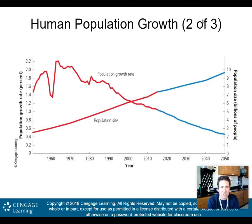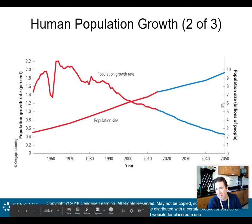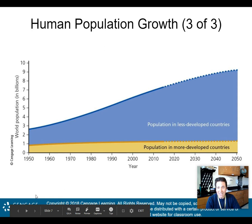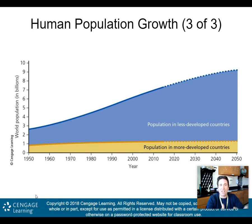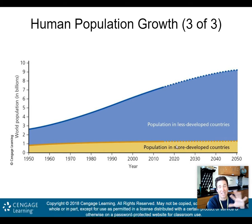Looking at this graph, the population growth rate is coming down, but our population size continues to increase. Even though the growth rate is decreasing, because we have more people on the planet it's still leading to a population increase. By 2050 we could be approaching 10 billion people. Most of that population increase is coming from less developed countries — many more developed countries are actually not seeing a population increase at all.